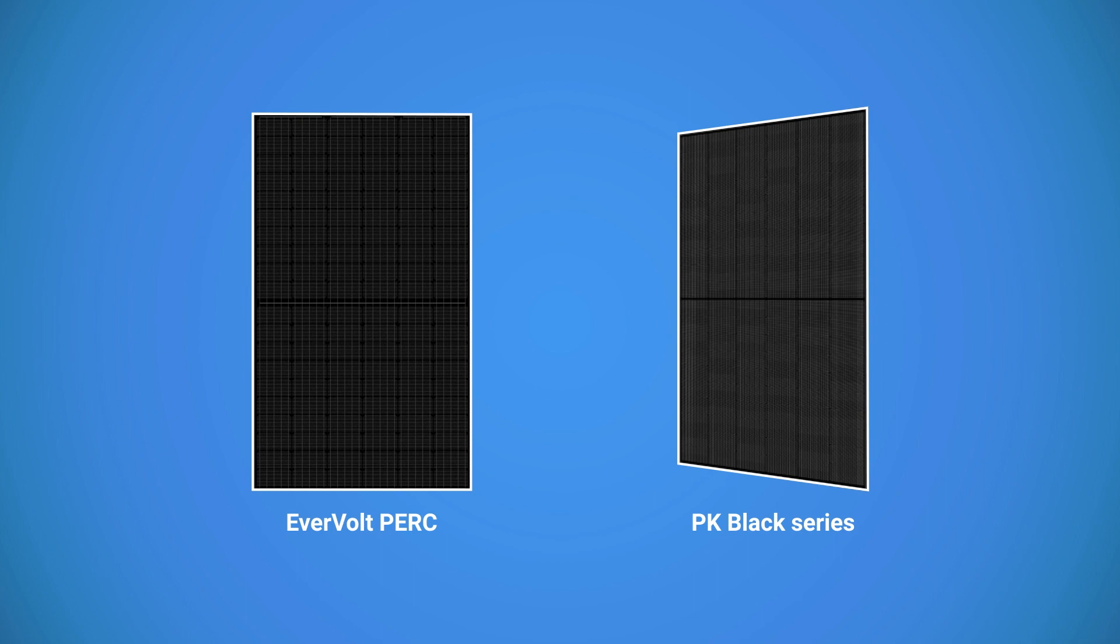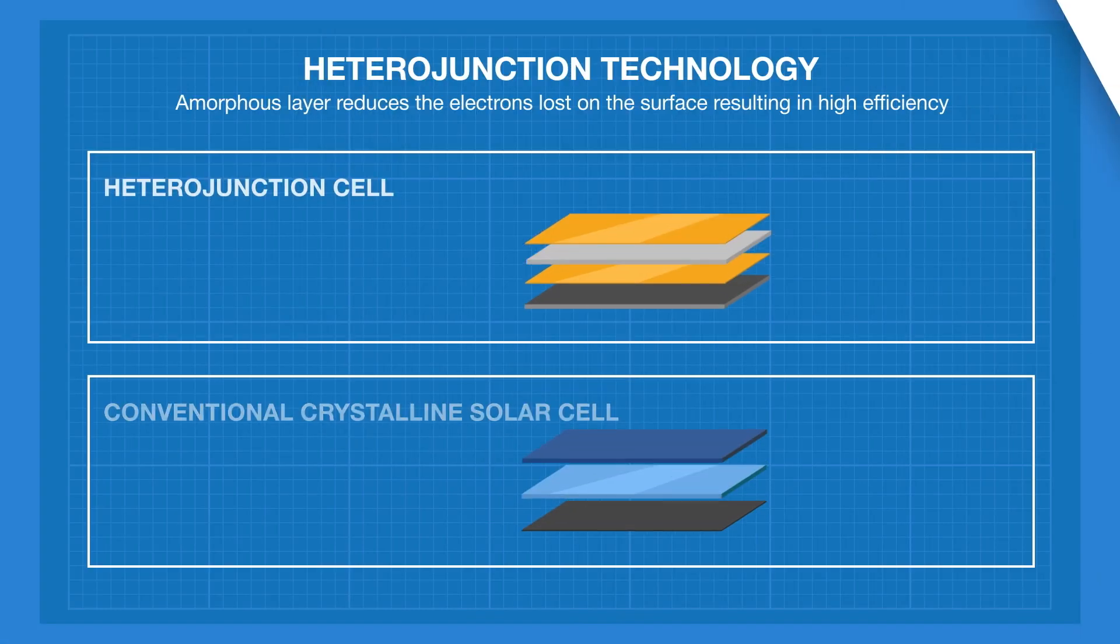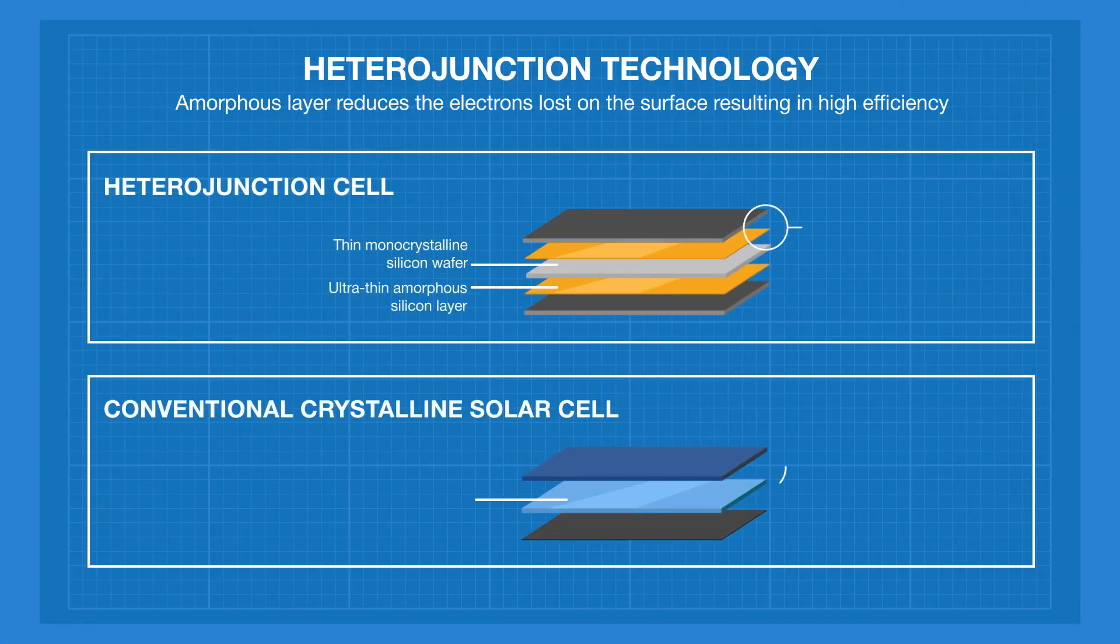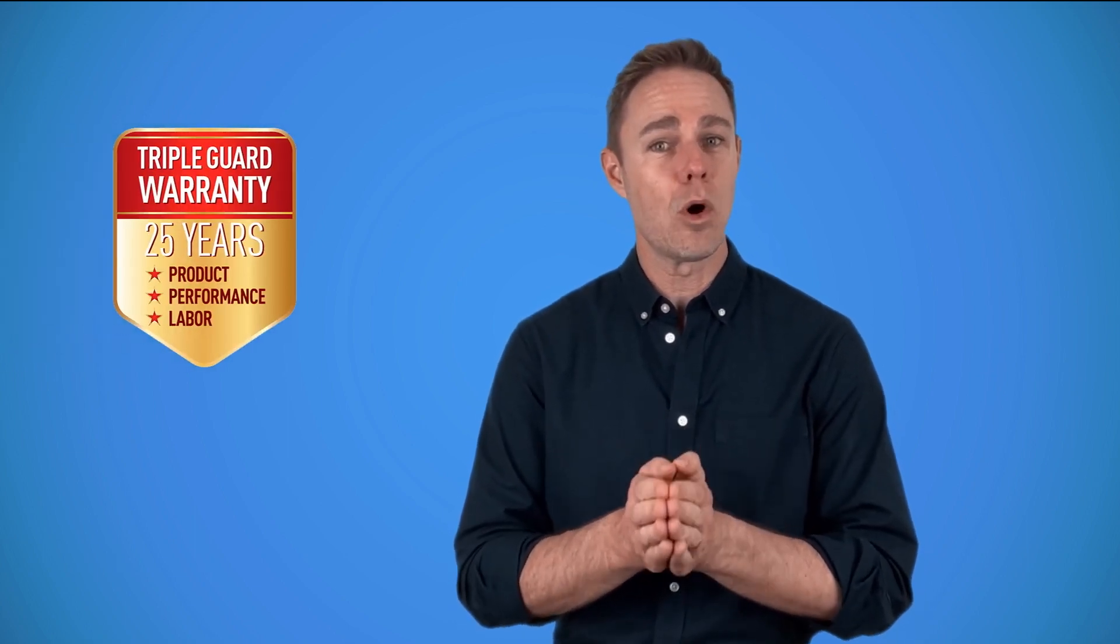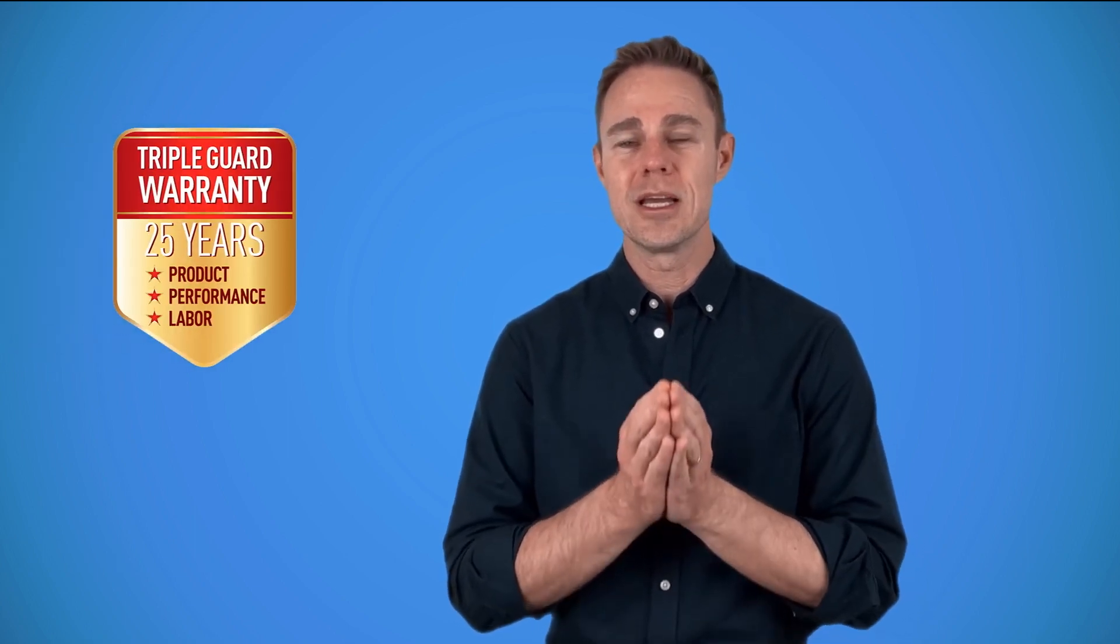I think the best panel for home in 2022 is the EverVolt PERK or PK Black series. There are 360-watt and 370-watt models. Here, Panasonic again uses their heterojunction cell technology, which makes their panel lose less energy when air temperature gets too high. If you live somewhere like Arizona or Texas, that's what I would choose. The panels look amazing and they come with triple 25-year warranty for product, output, and labor.